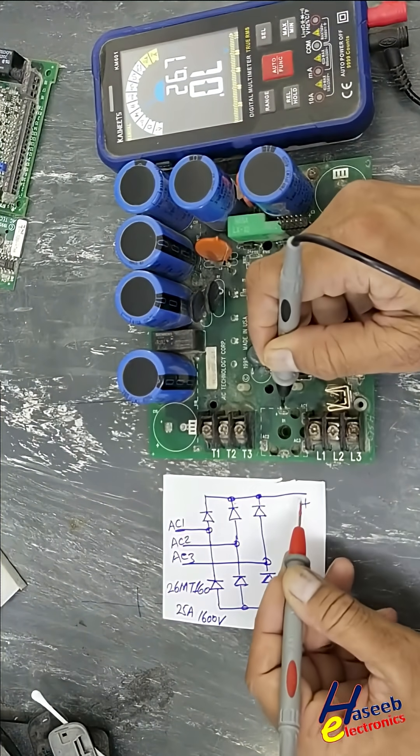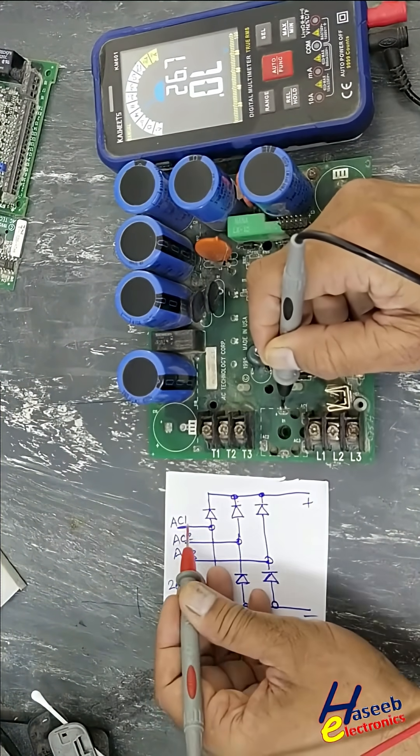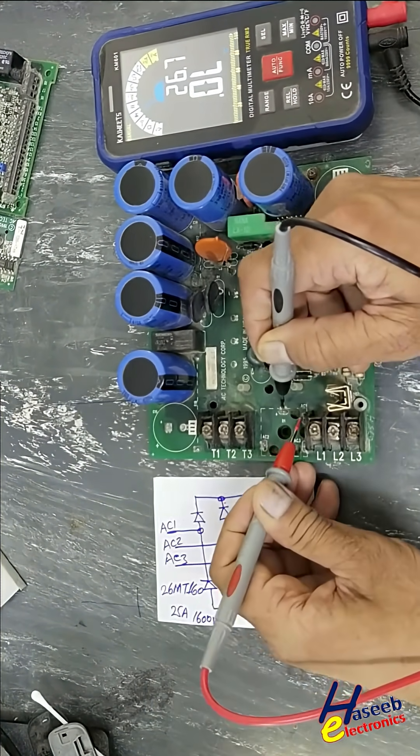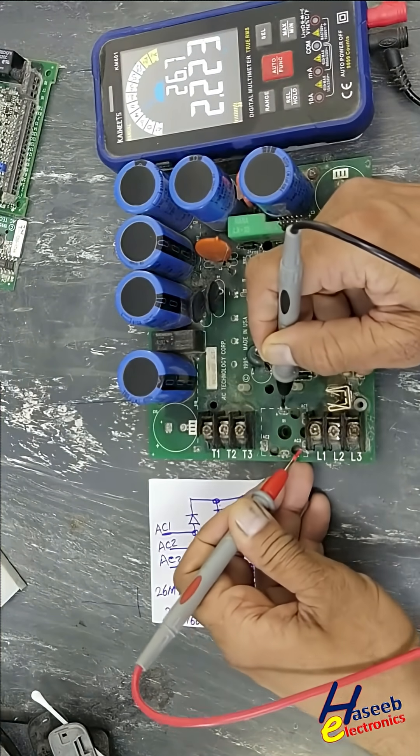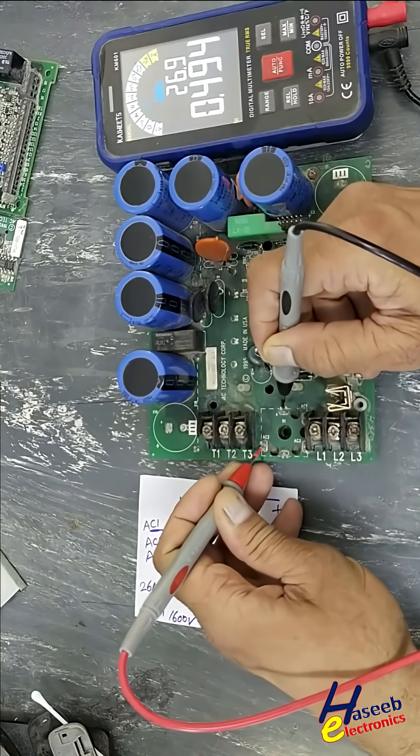Place the black lead at the positive output terminal. Now check with the AC input terminals. One diode, second diode, third diode.